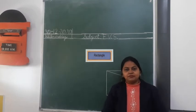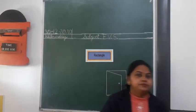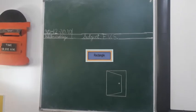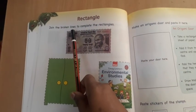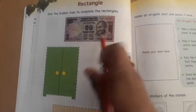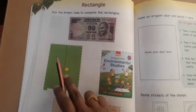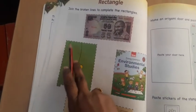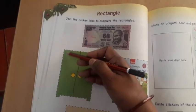So try to learn this one. Now I am going to show you two pages of your EBS book in which you have to do the work of rectangle. Let's start. This is page number 42 and 43 of your EBS book — Rectangle. Join the broken lines to complete the rectangles. First you have to join these dots. Can you see this 50 rupees note? It is in rectangle shape. This is Elmira — it is also in rectangle shape. You have to join all these dots to make a rectangle shape.